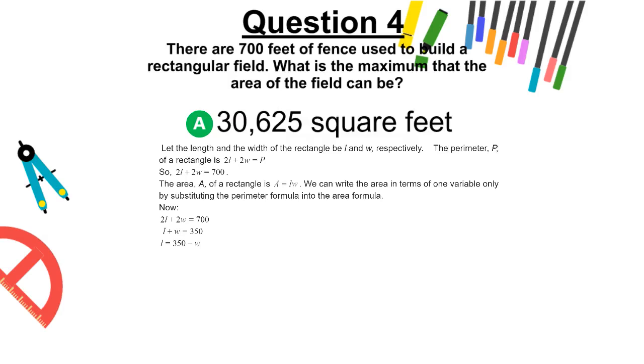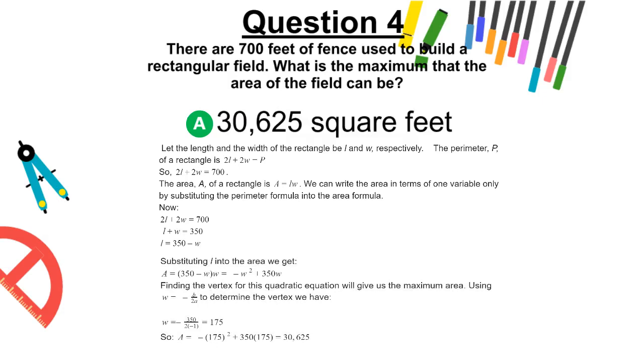So, 2l + 2w = 700. The area of a rectangle is area equals length times width, or A = lw. We can write the area in terms of one variable only by substituting the perimeter formula into the area formula. Now, 2l + 2w = 700. l + w = 350. l = 350 - w. And now we get the following to solve.